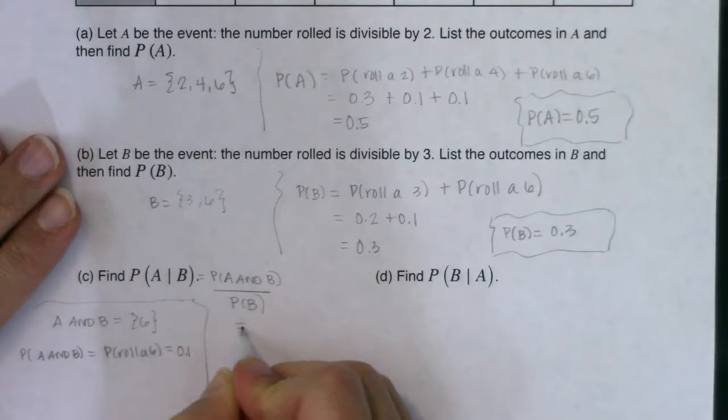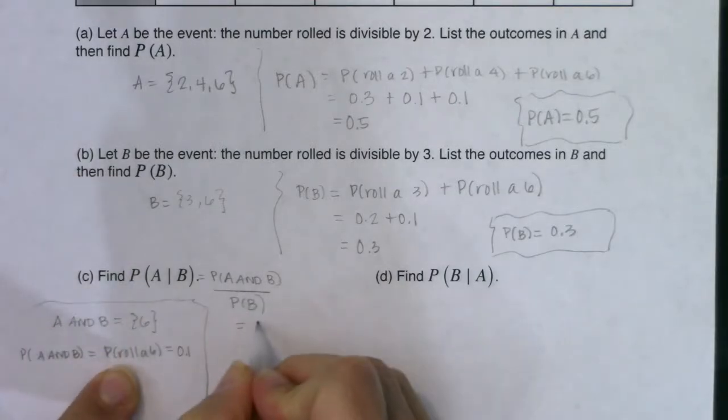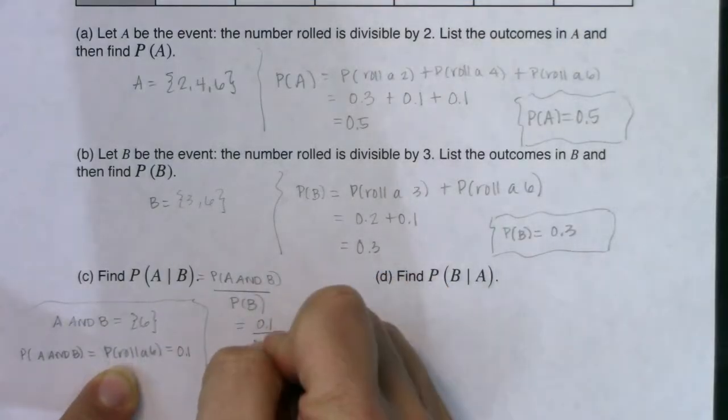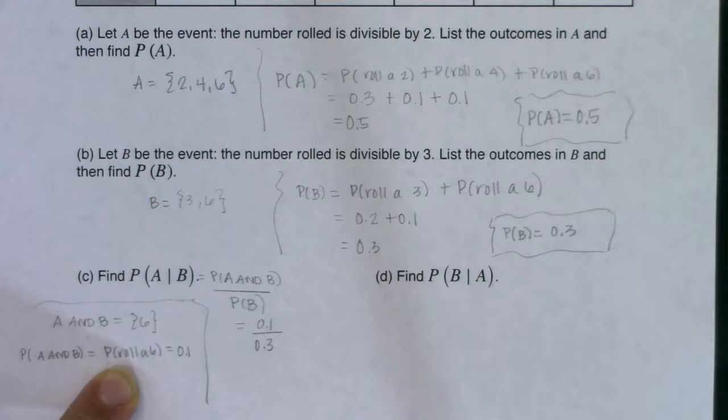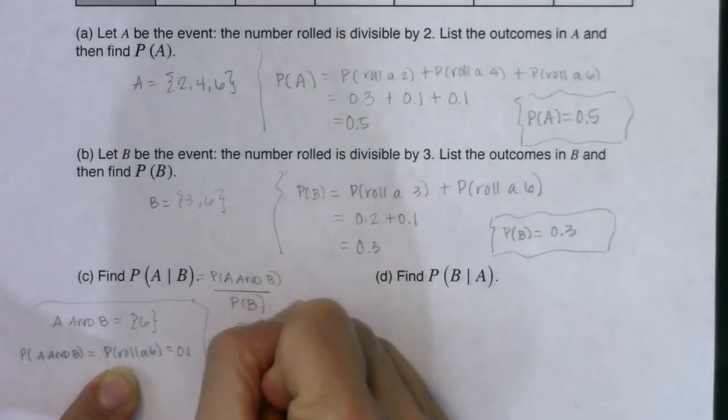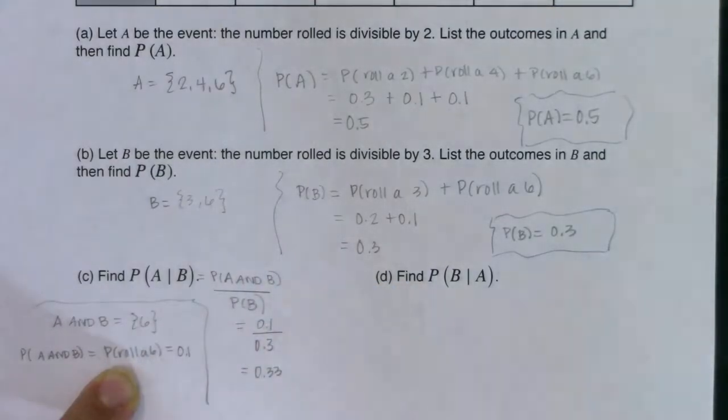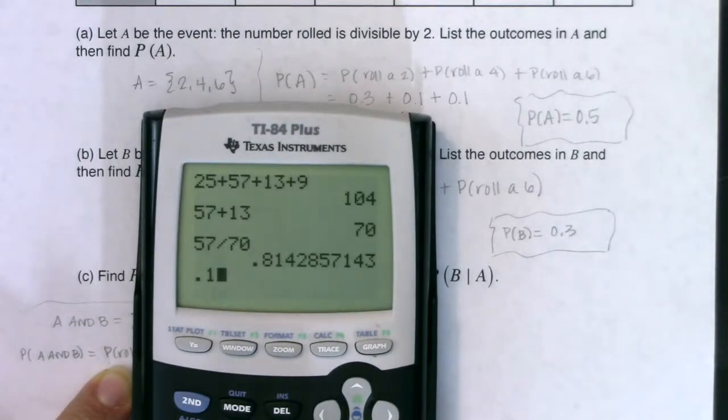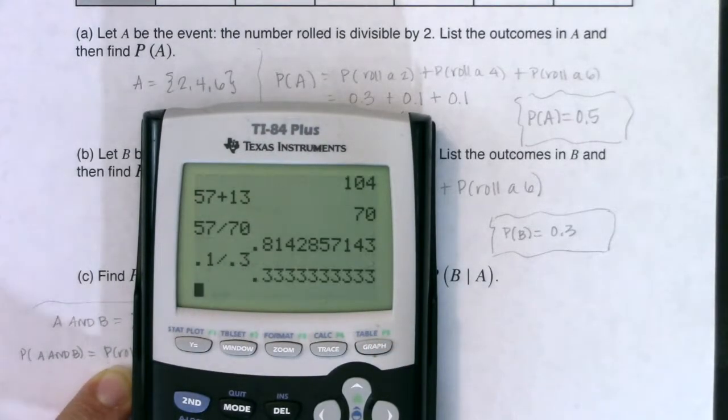My numerator in this problem, probability of A and B, we just found it, it's 10%. The probability of B was 30%. So 10% in ratio to 30% winds up being about 0.33. All right, and we could crunch that on our calculators if you're not sure. So 0.1 divided by 0.3 gets you 0.33.